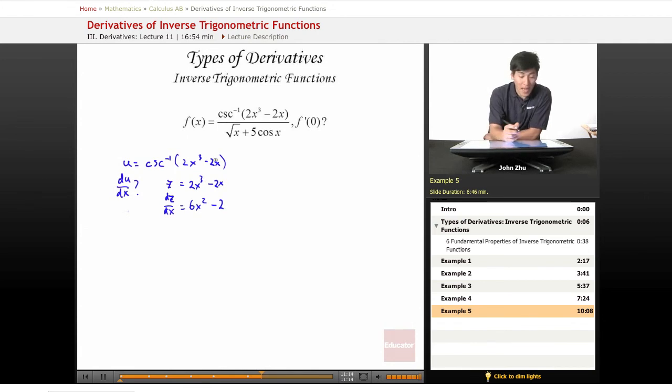All right, so going back, we know that du dx is going to equal cosecant inverse of u, which by our table of properties, if we remember, is just the negative version of a secant inverse. So that is negative 1 over absolute value of u times the square root of u squared minus 1.